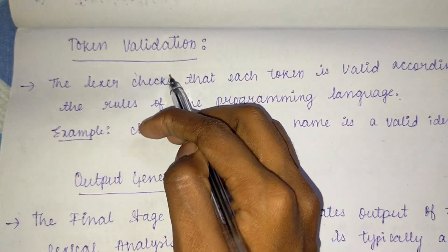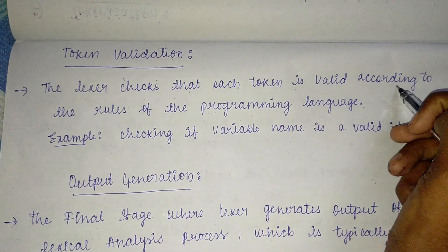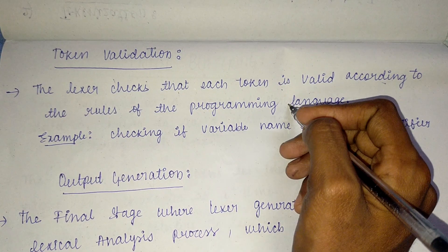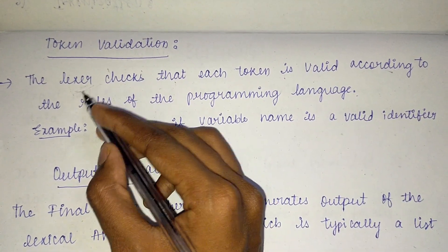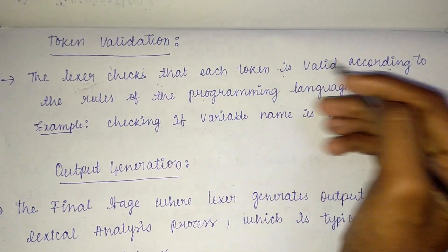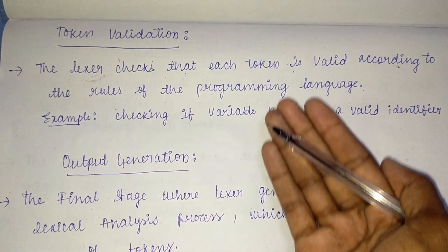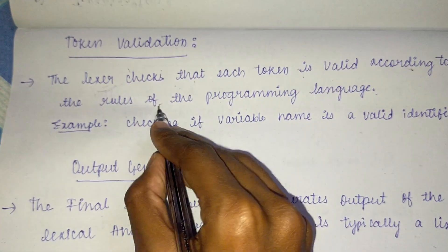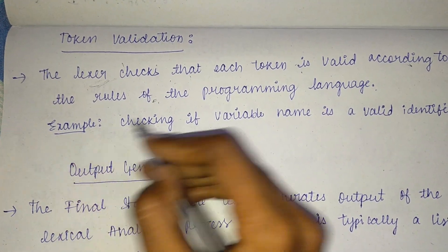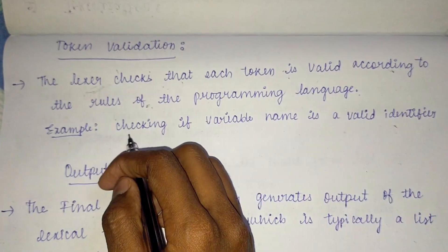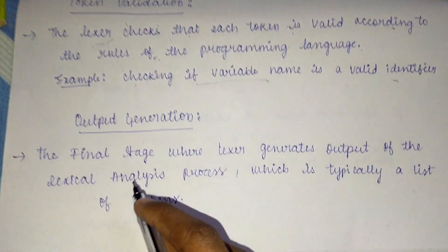Next is token validation. The lexer checks that each token is valid according to the rules of the programming language. For example, checking if a variable name is a valid identifier.